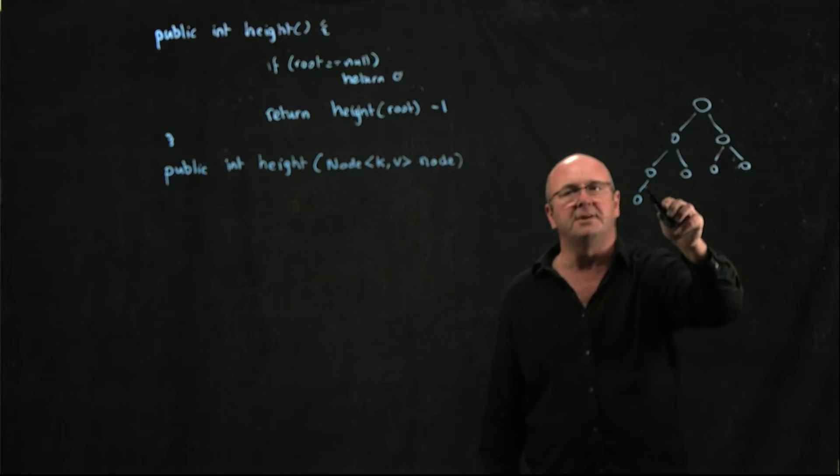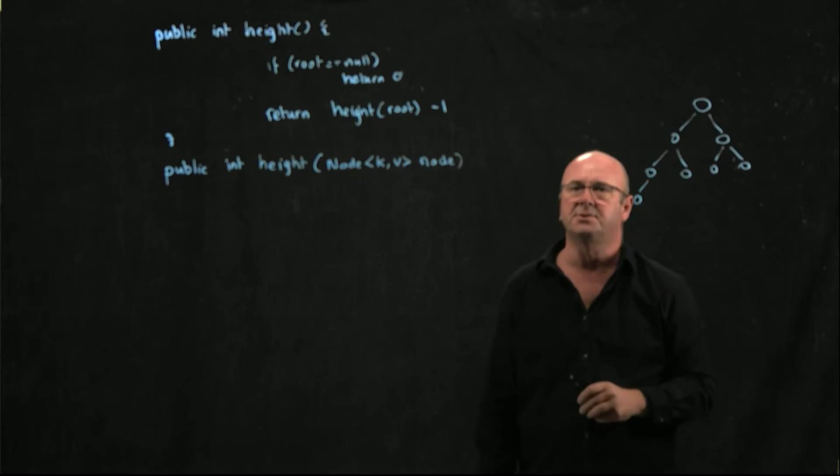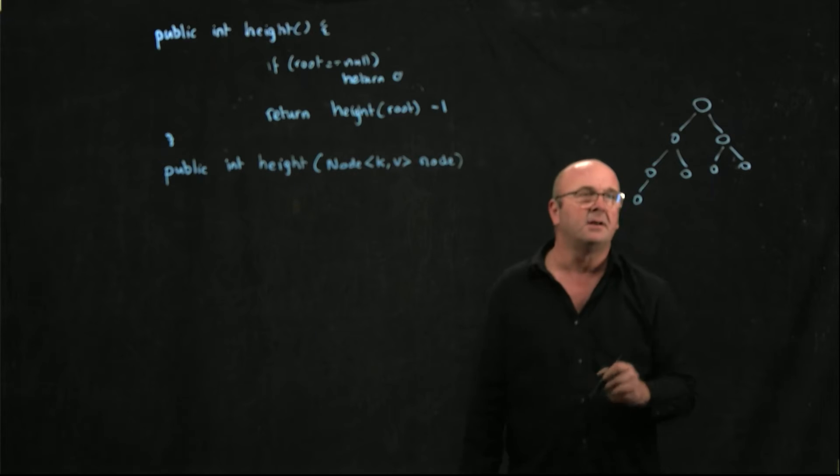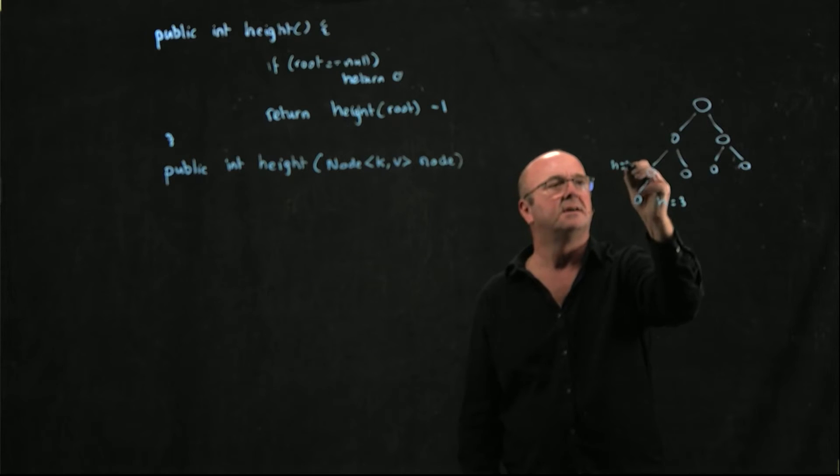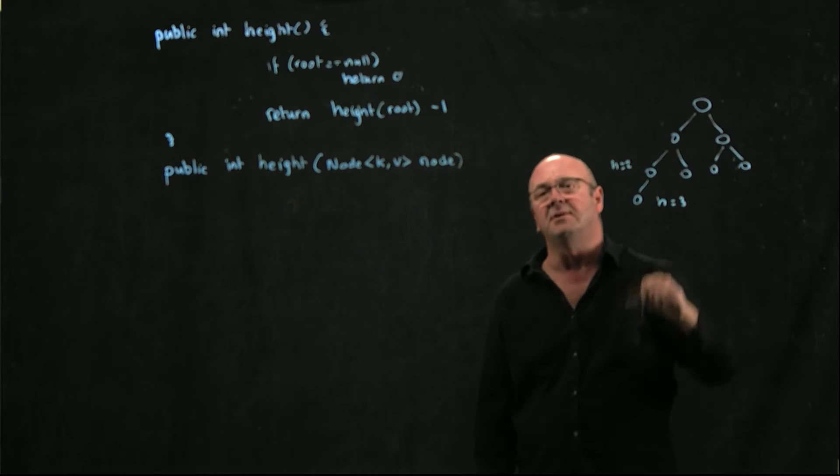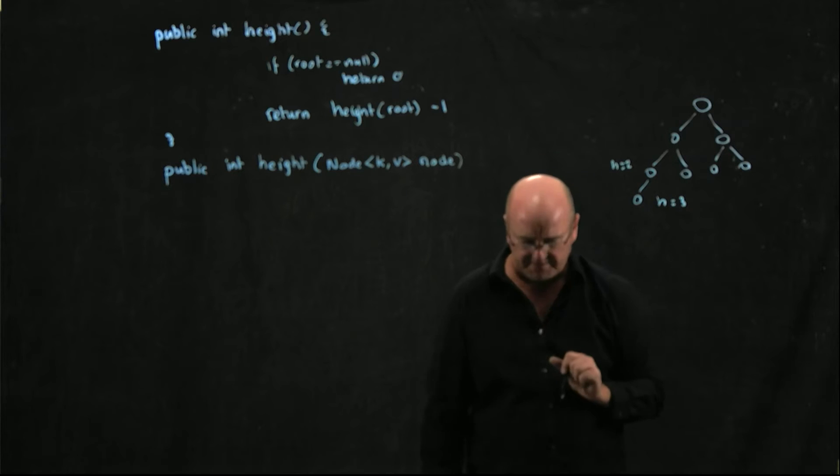At this node, I've got two edges on the left, I've got one edge on the right, so my height is 2. And notice that the height, so here the height is 3, here the height is 2, the height is the number of edges, not the number of nodes.